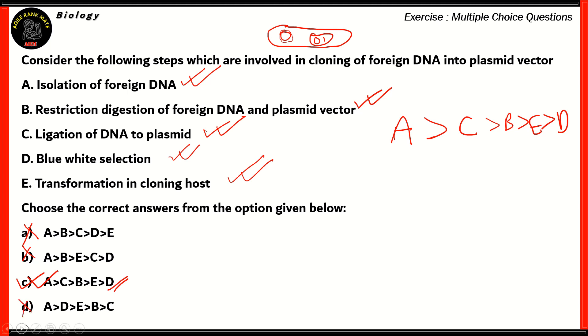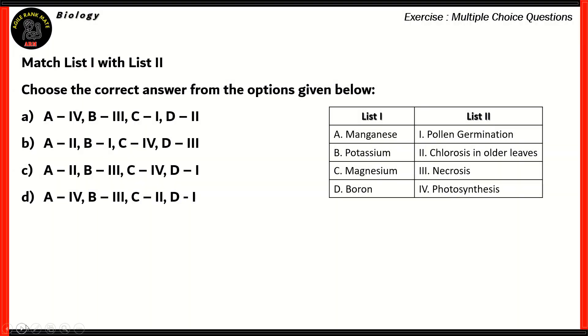Now, let's look at another question. Match list 1 with list 2. List 1 contains manganese, potassium, magnesium, and boron. List 2 contains pollen germination, chlorosis in older leaves, necrosis, and photosynthesis. Now, we need to choose the correct answer from the options given below. So we have A4B3C1D2, A2B1C4D3, A2B3C4D1, A4B3C2D1.